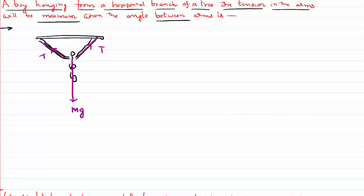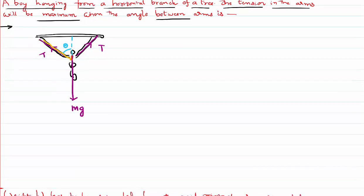I want to calculate for what angle between the arms this tension will be maximum. Let us assume the total angle between the two hands is 2θ, so each hand makes an angle θ with the vertical. Now I can resolve this tension into components, since tension is a vector that always acts towards the point of suspension. The adjacent component becomes T cosθ.